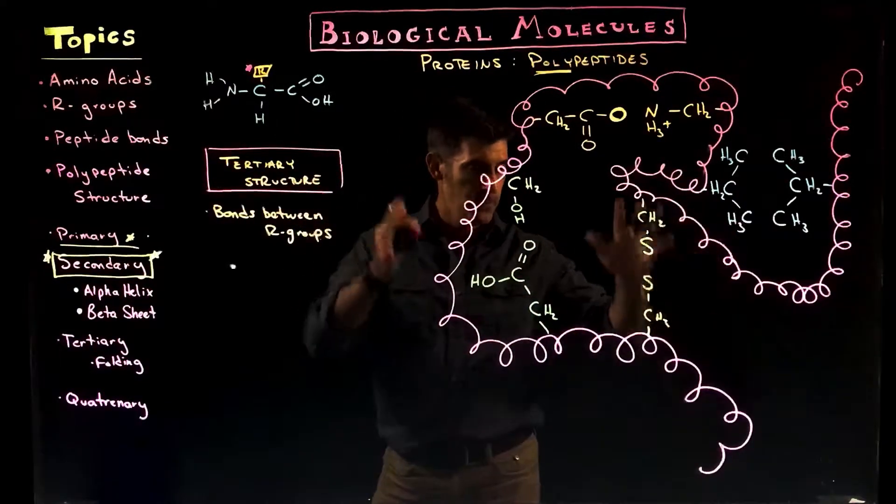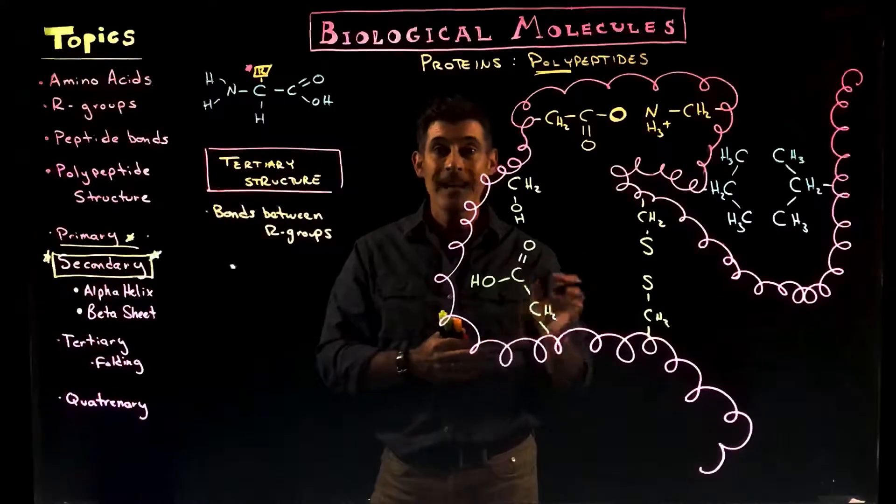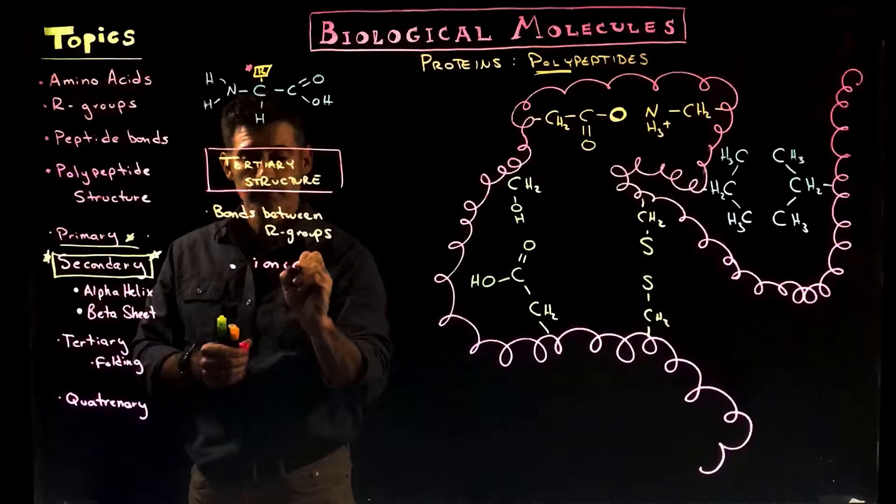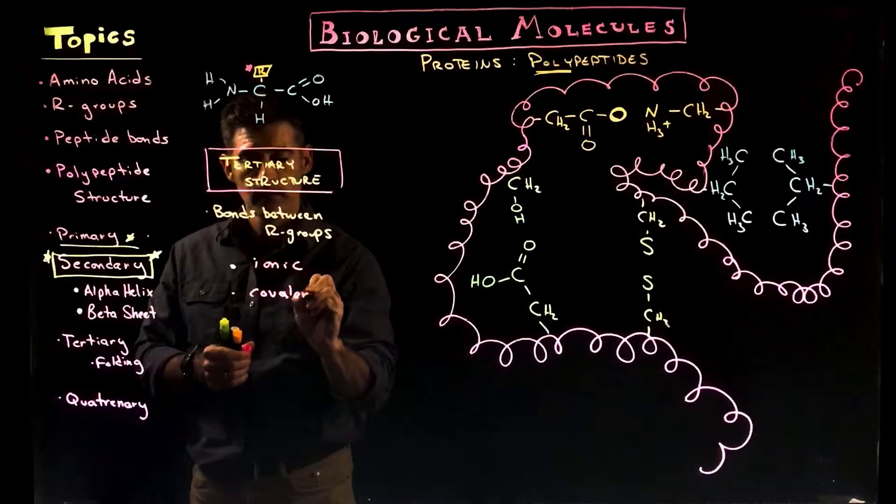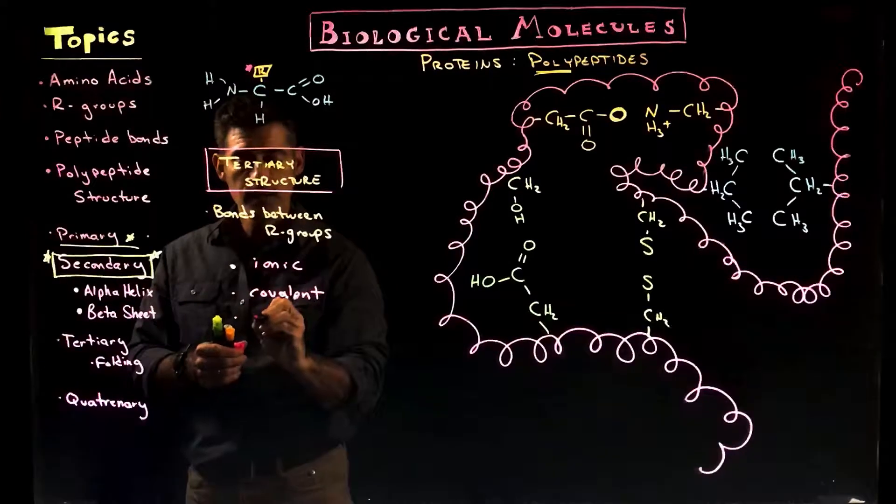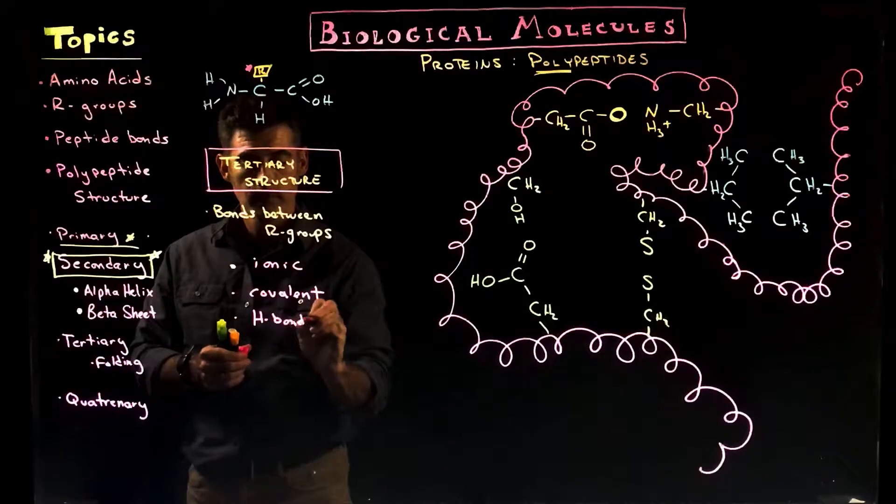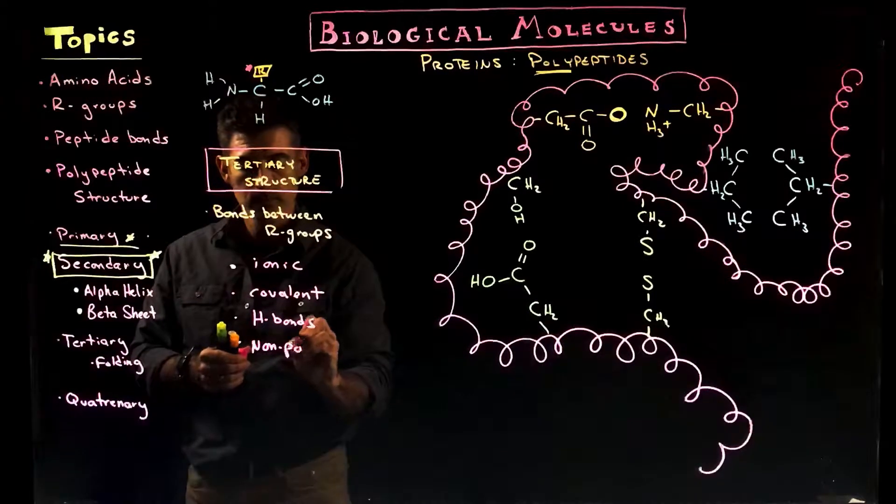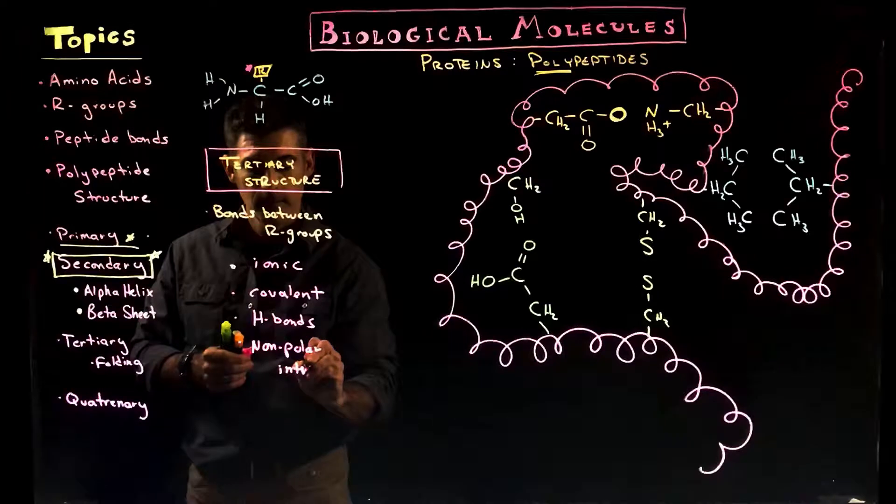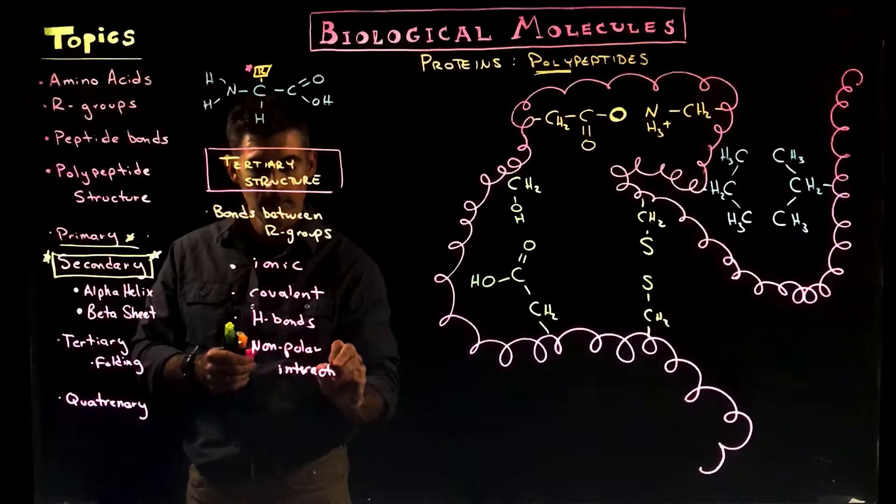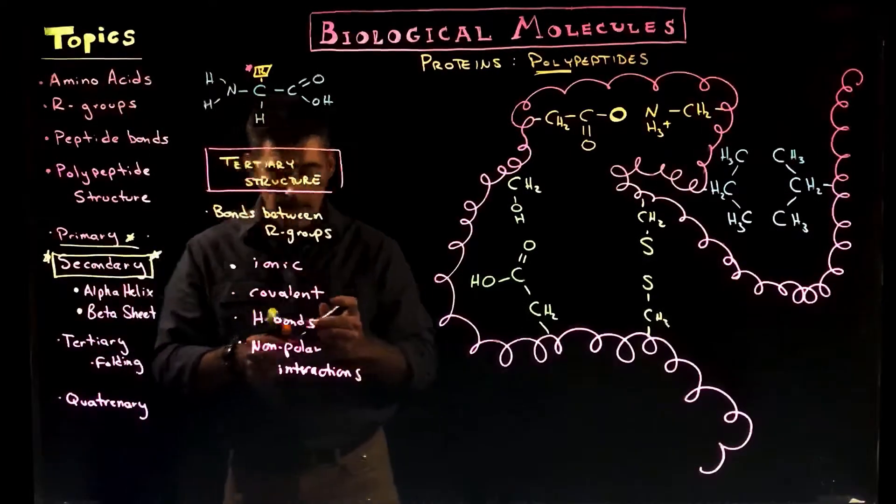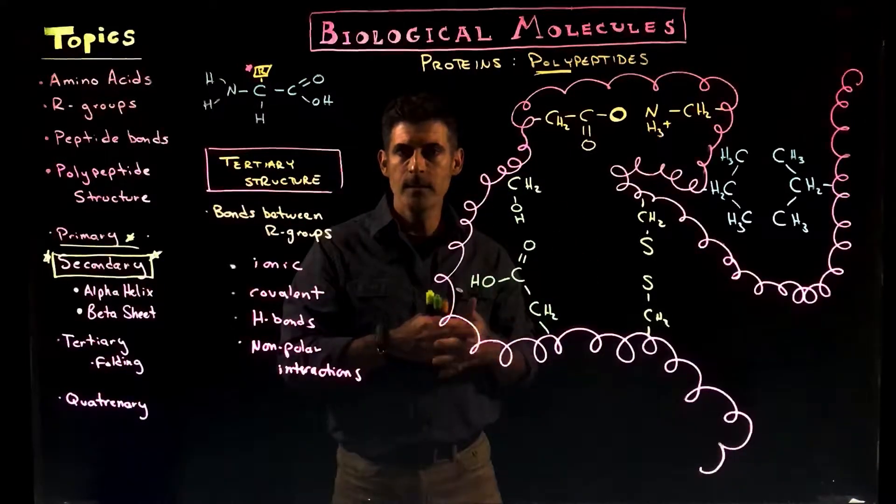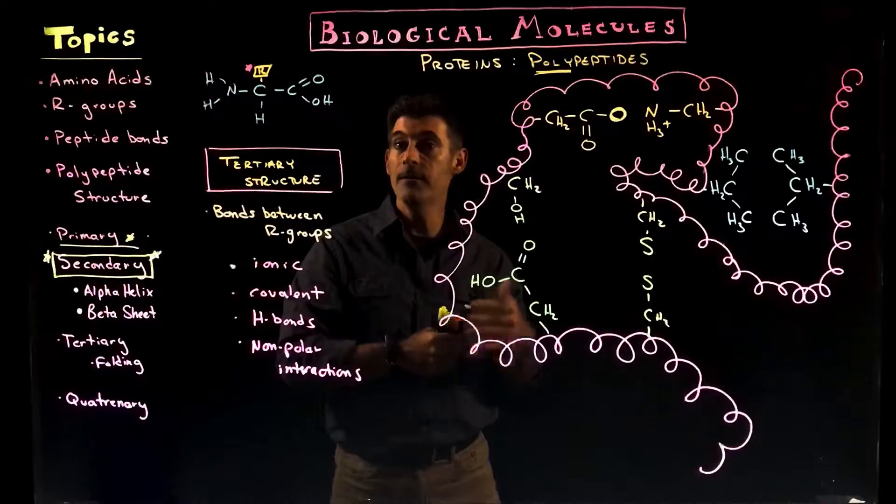That's what this squiggly picture over here is going to talk about. The types of bonds we're going to see are going to be ionic, covalent, hydrogen bonds, and something called nonpolar interactions. And these types of bonds are what are going to create and stabilize the three-dimensional structure of a functional protein.